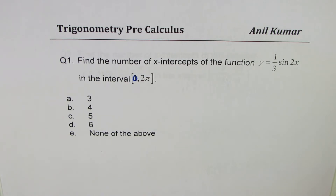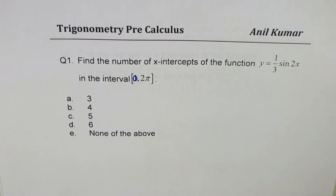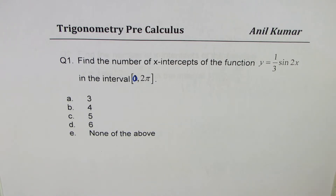Question number one: find the number of x-intercepts of the following function. The function is y equals 1 over 3 sin 2x in the interval 0 to 2π.